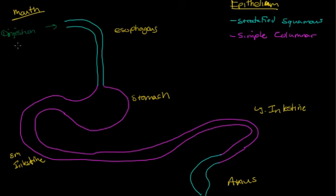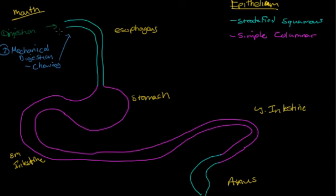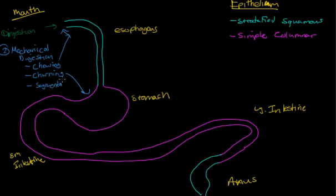The second step is mechanical digestion. That's going to involve chewing up here in your mouth, churning in your stomach, and segmentation in the small intestine. We'll scroll down to go over the difference between segmentation and peristalsis, which takes place in the small intestine.